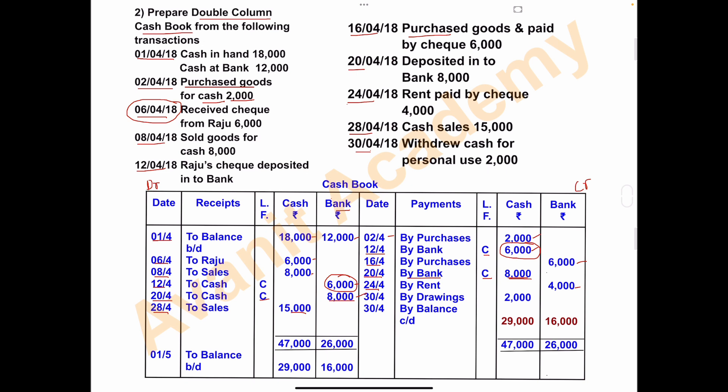The last entry is on 30th April 2018: the owner withdraws cash of rupees 2,000 from the business for personal use. This is considered drawings. Since cash is decreasing, record it on the payment side: write 30th April, 'by drawings', and the amount is 2,000 in the cash column.